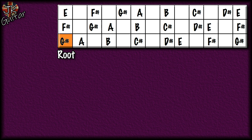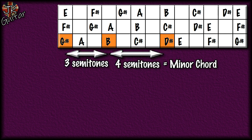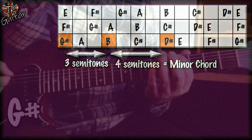Let's do the same process again, now starting from the G# note. Treating G# as the root, we go to the third and the fifth, giving us G#, B and D#. Measuring the intervals, we have three semitones then four semitones — so once again we have a minor chord. Because its root note is G#, it's a G# minor chord.